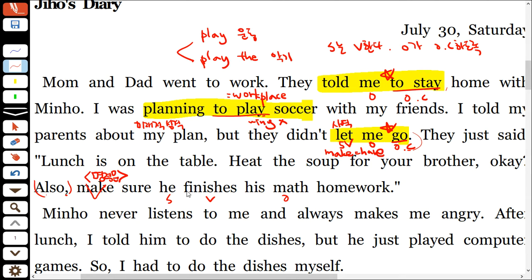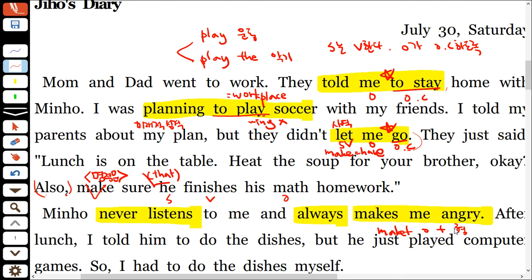목적어의 역할을 하는 문장이 있을 때 that을 생략할 수 있어요. 일반동사 앞 위치도 확인하세요. 'Make me include' 자리에서 make가 5형식 동사일 때 사역동사처럼 동사원형이 올 수도 있고, 보어 자리이기 때문에 형용사가 올 수도 있어요. make + 목적어 + 형용사, 즉 목적어를 ~하게 만들다. 이때 해석은 '~하게'지만 절대 부사가 올 수 없어요. 문장의 필수성분 자리인 주어, 동사, 목적어, 보어 자리에는 절대 부사가 올 수 없어요.